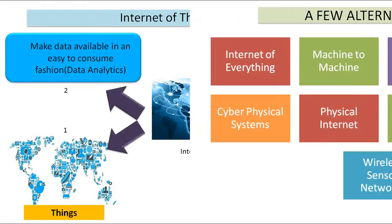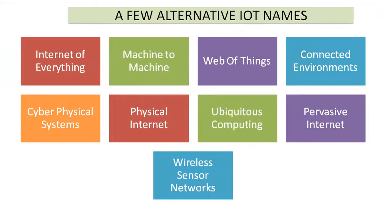There are some names used for IoT in the industry. Some organizations use IOE — Internet of Everything — or refer to it as machine-to-machine communication, M2M. Internet of Everything gives the complete picture. Other terms include web of things, connected environment, pervasive internet, wireless sensor networks, physical internet, and cyber physical system. There are various terminologies used in the industry, but ultimately all of them are referring to IoT.